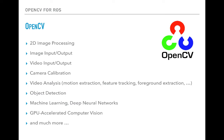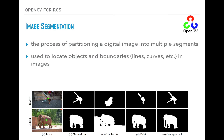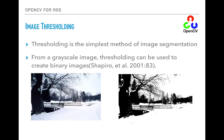One of the basic functionalities of OpenCV is image segmentation. Image segmentation is the process of partitioning a digital image into multiple segments, and it is used to locate objects and boundaries in images. Another operation is image thresholding, which is the simplest method of image segmentation. It allows transforming a grayscale image to a binary image. The idea is to take a color as a threshold — any color above the threshold will be considered white, and any color below the threshold will be considered black, so the resulting image will be binary, either black or white.